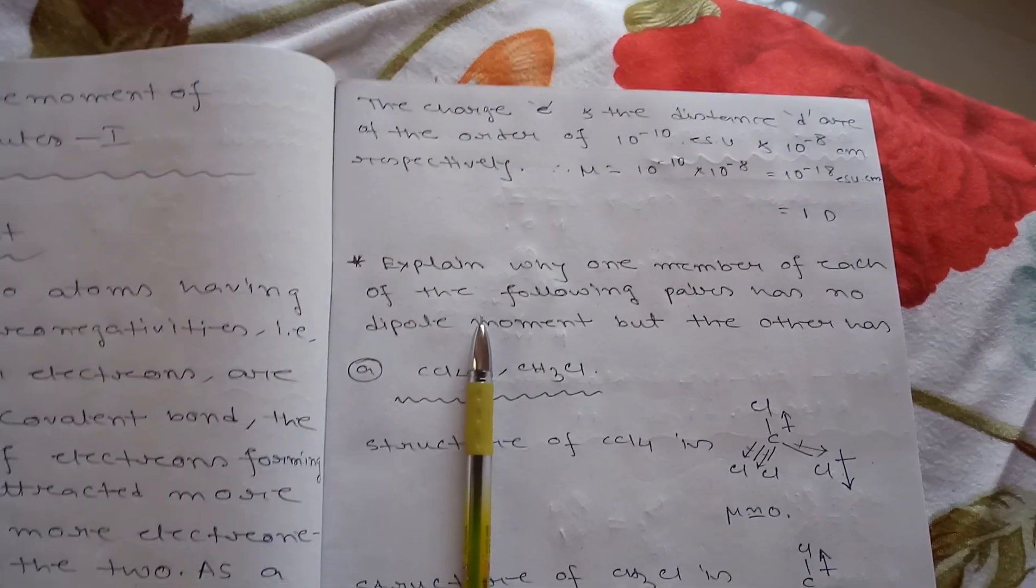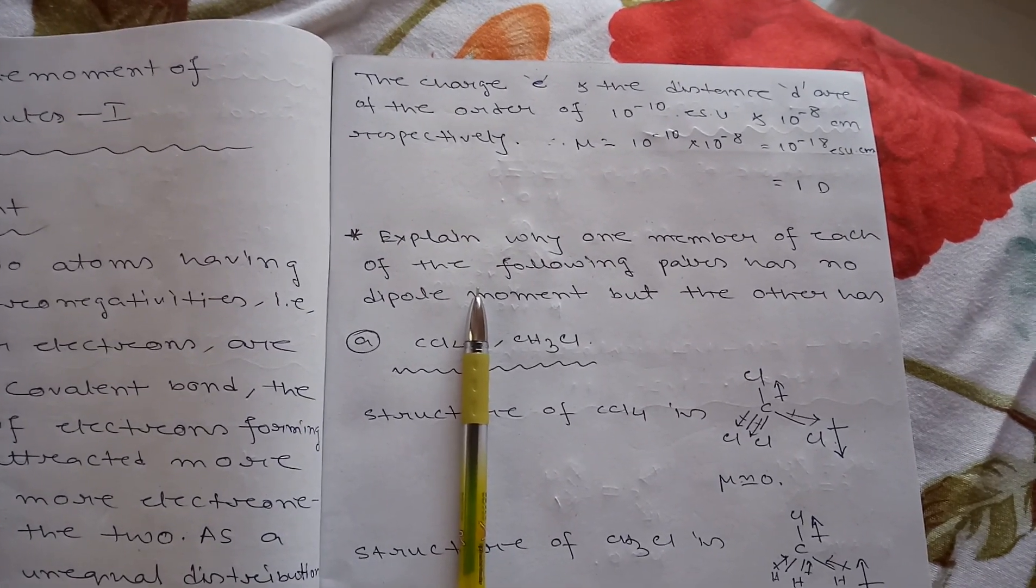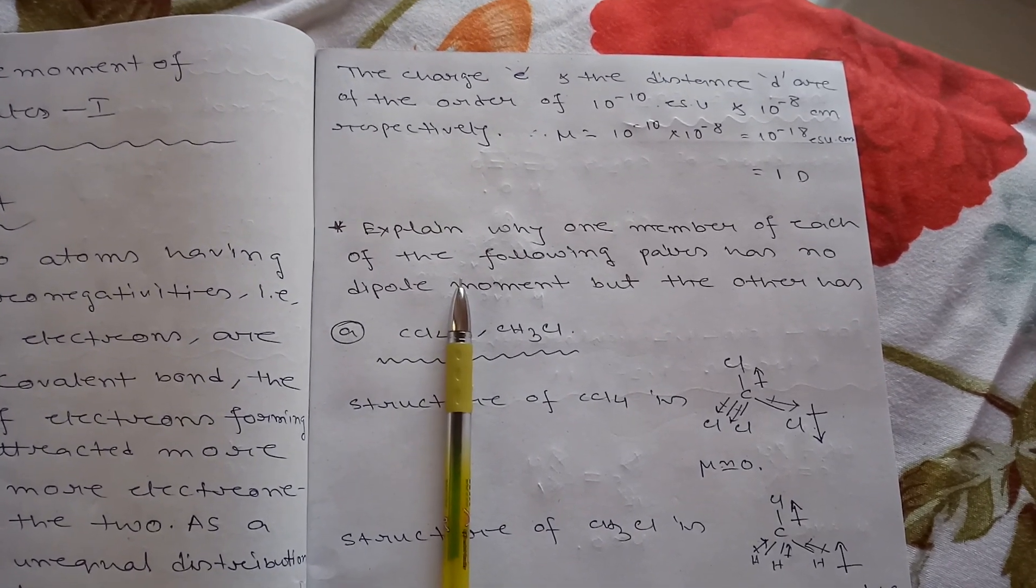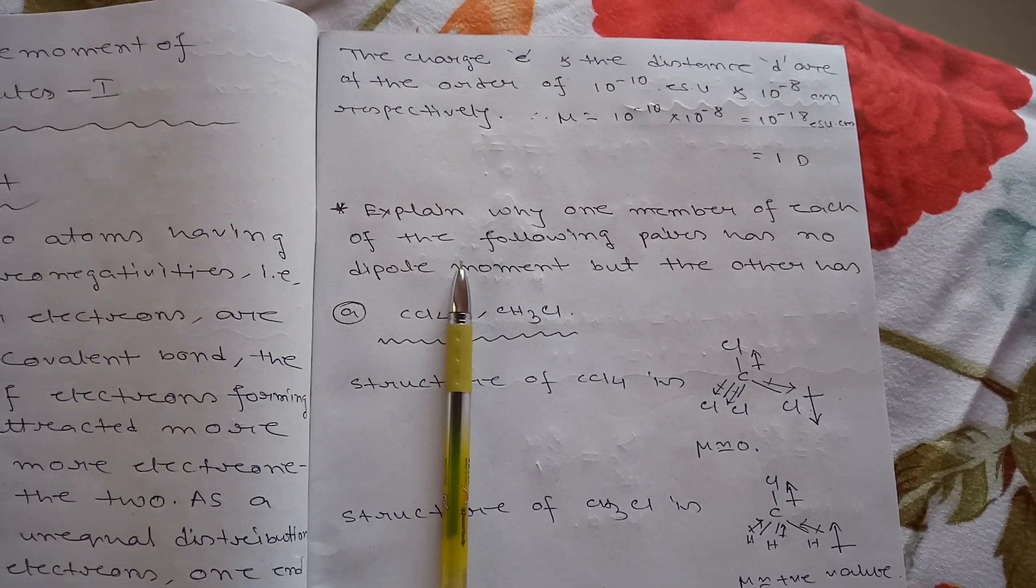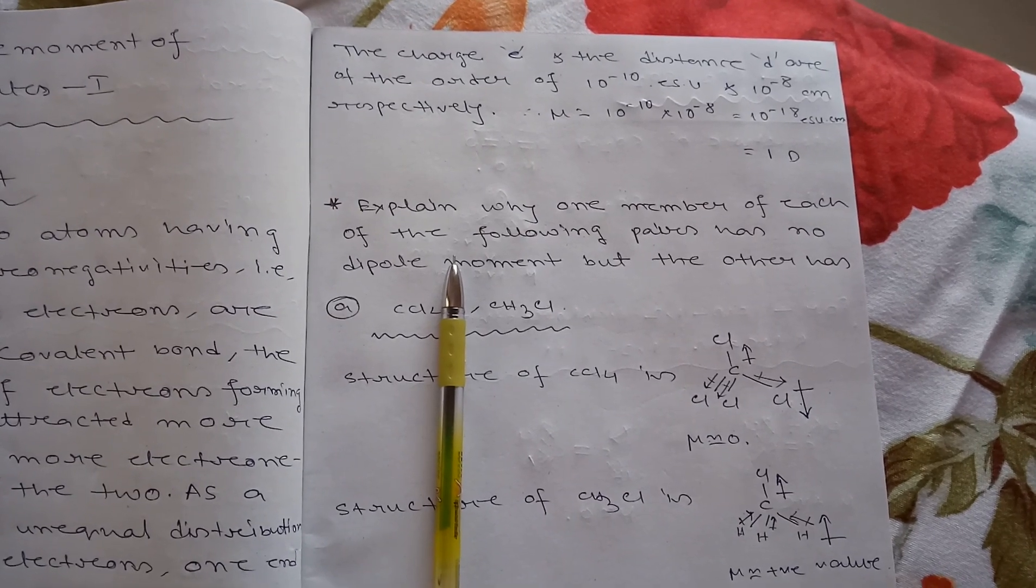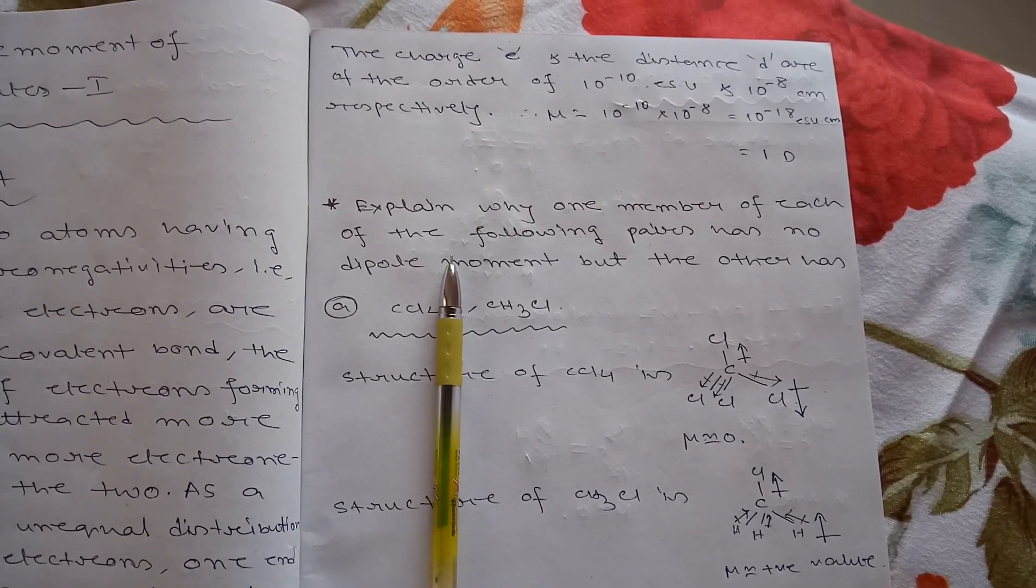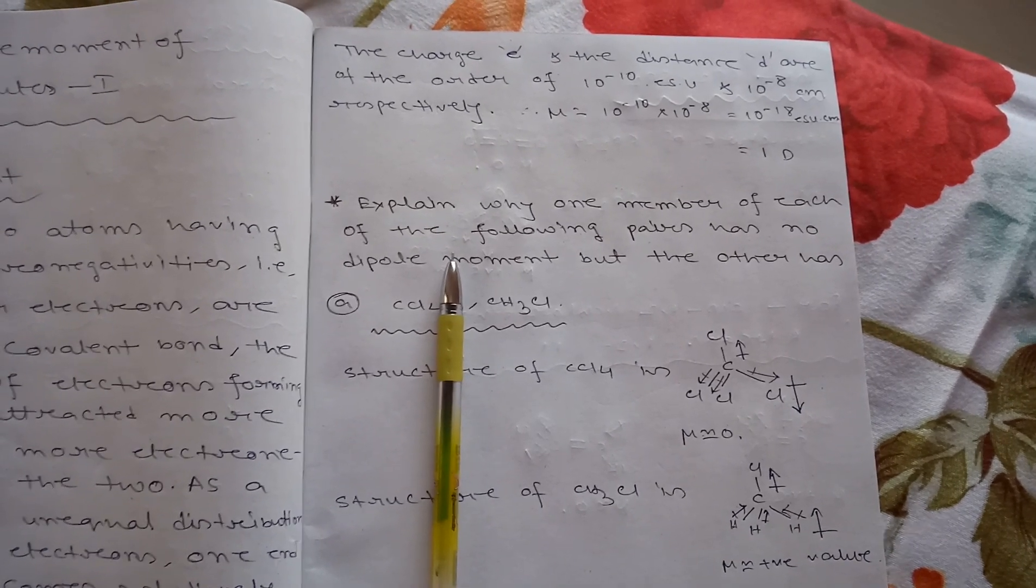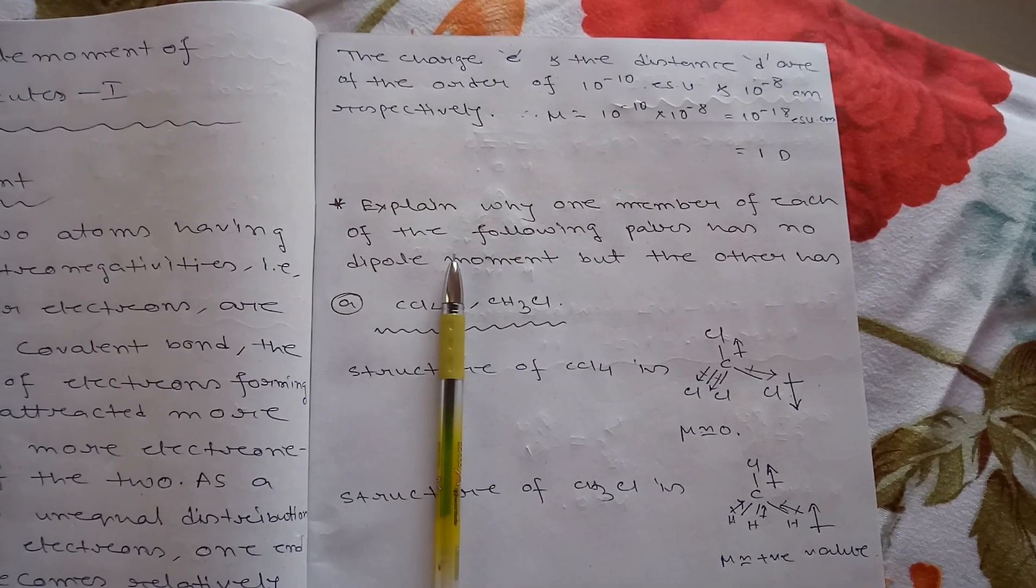The dipole moment of a molecule is a resultant of vector sum of the individual bond moments of the molecule. When a molecule is formed by two atoms of different electronegativity, the molecule must possess a dipole moment because there is no question of cancellation of the moment.